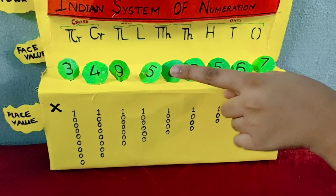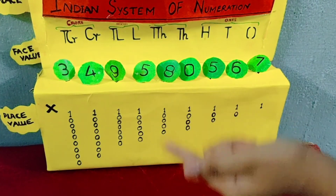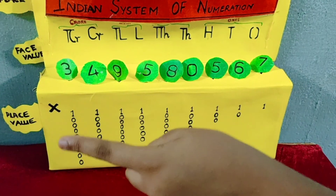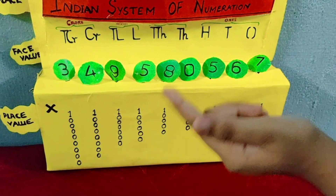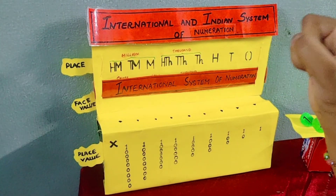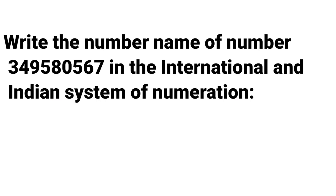For example, if you want to know the place value of 5 in this number, 5 into lakh is equal to 5 lakh. Now let's see one example: write the number name of the given number in the international and Indian system of numeration.